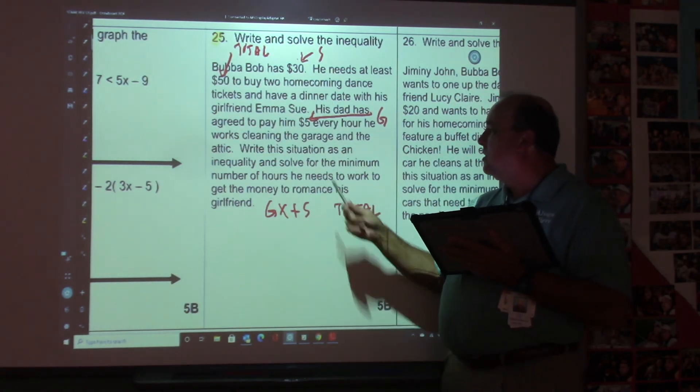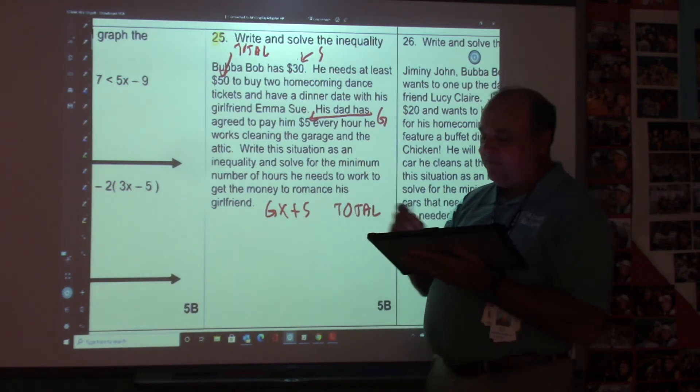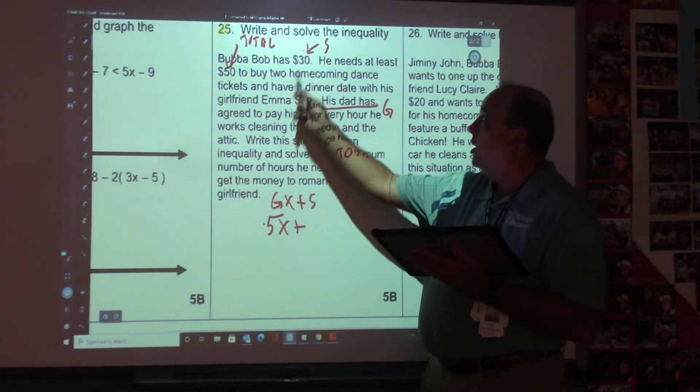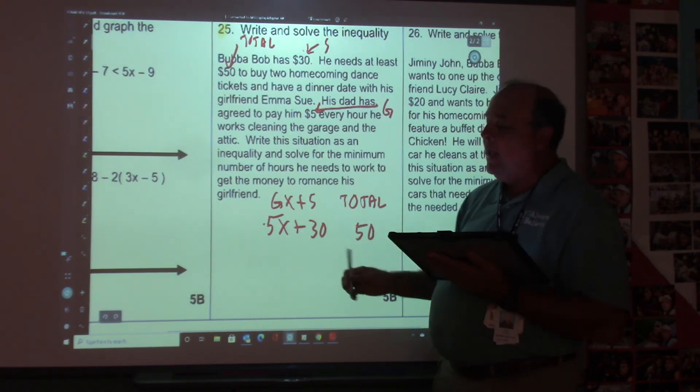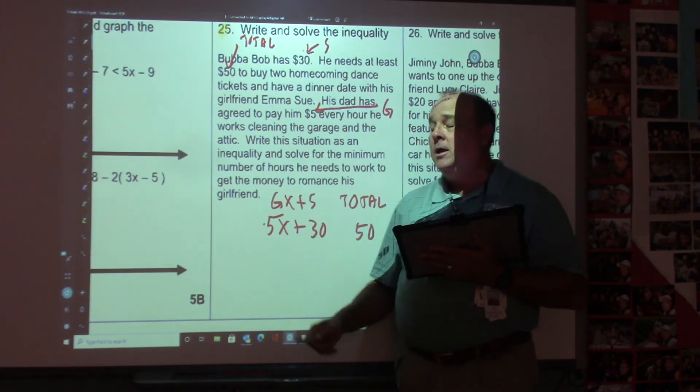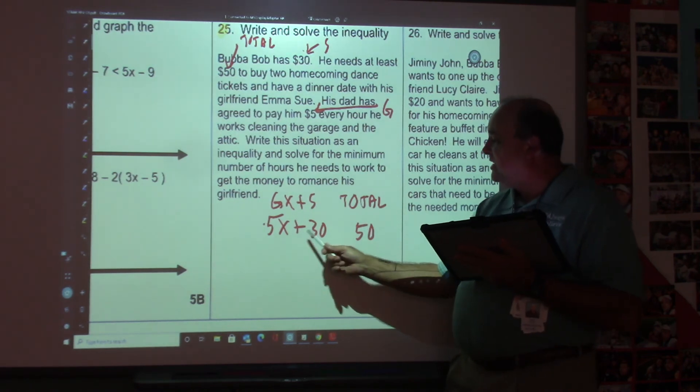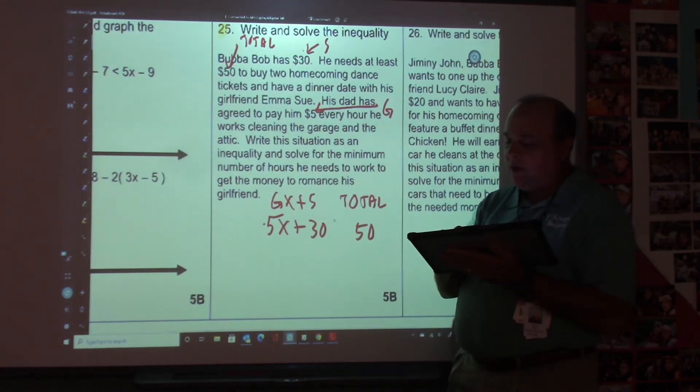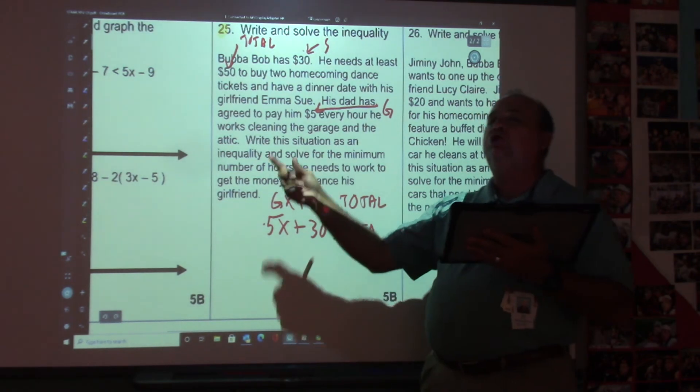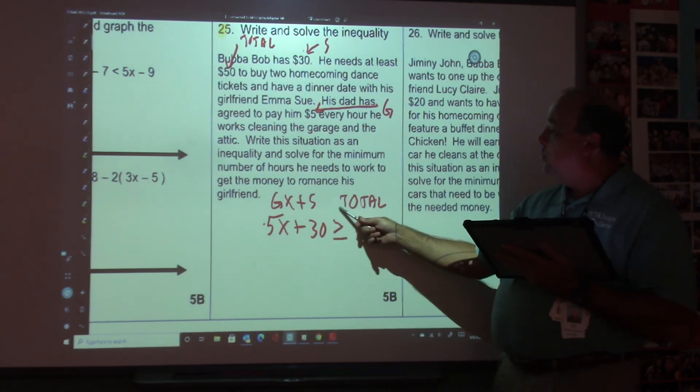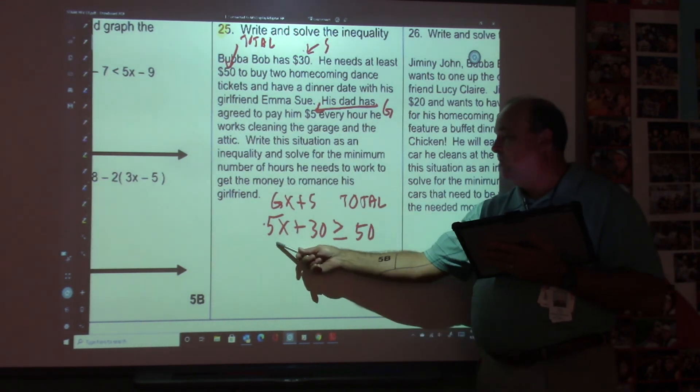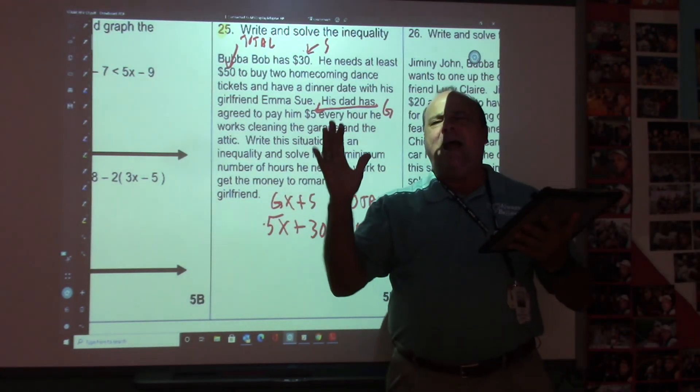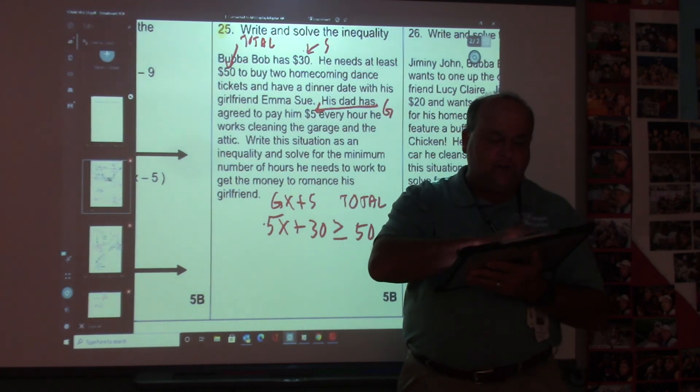Write this situation as an inequality and solve for the minimum number of hours. So we're going to have 5X plus the starting number is 30, and then put 50 over here. He wants at least $50, right? So at least $50 means that this has to be more than 50, right? So we want this amount to be over or at least 50. That means it's going to be greater than or equal to. Now then you should be able to solve this. I'm not going to solve it for you. You're going to move the 30 over and divide by the 5. Does everyone see how we created the inequality? You're going to do the same thing. 26 is pretty much the same.